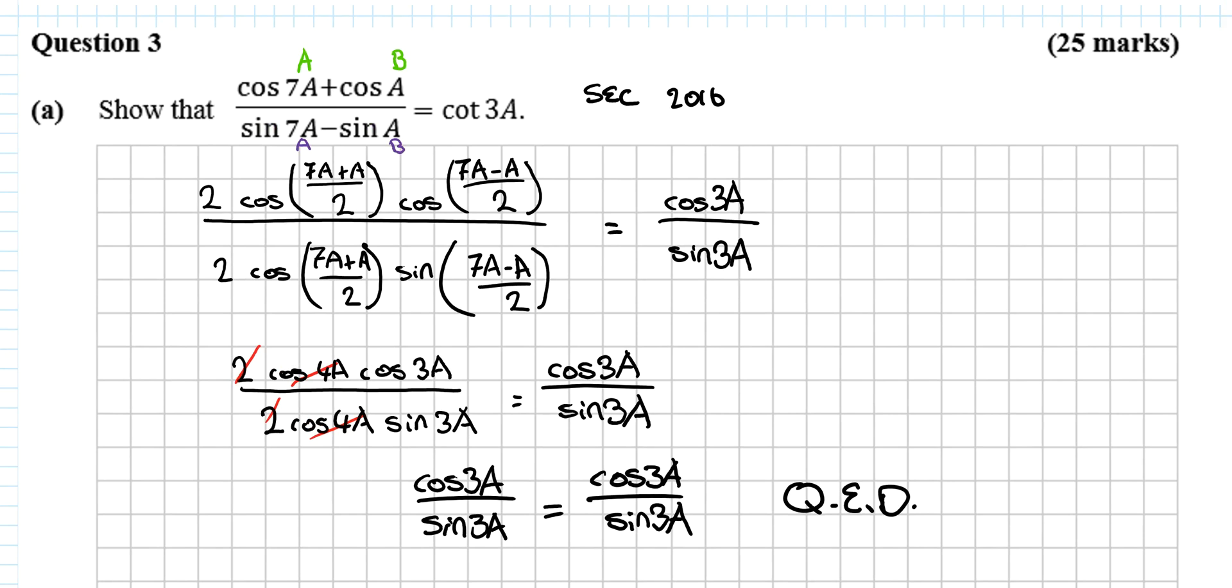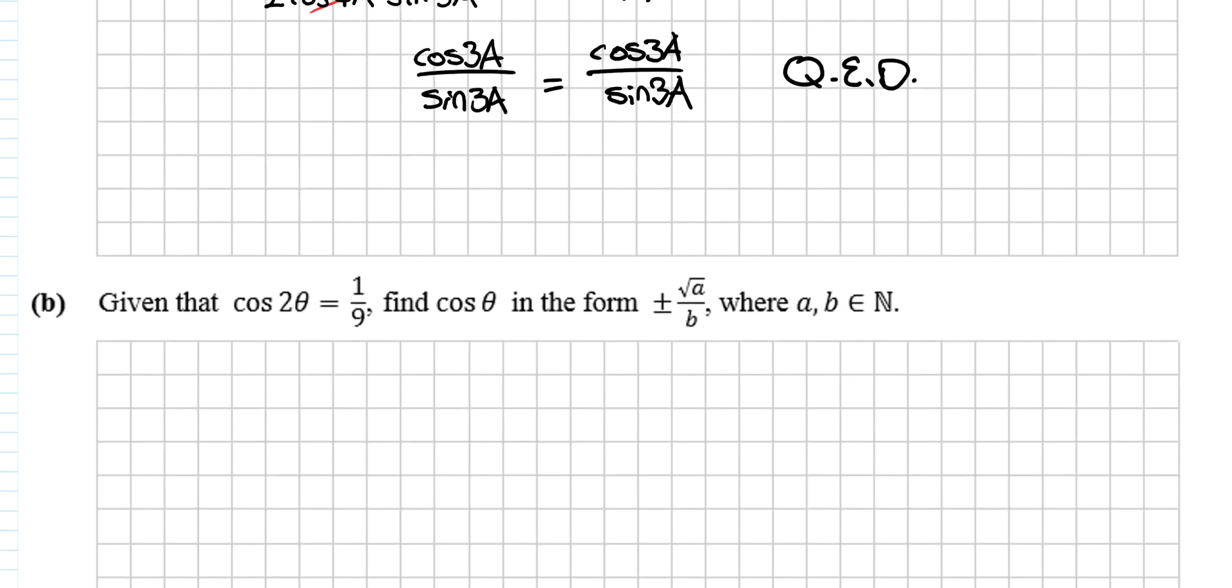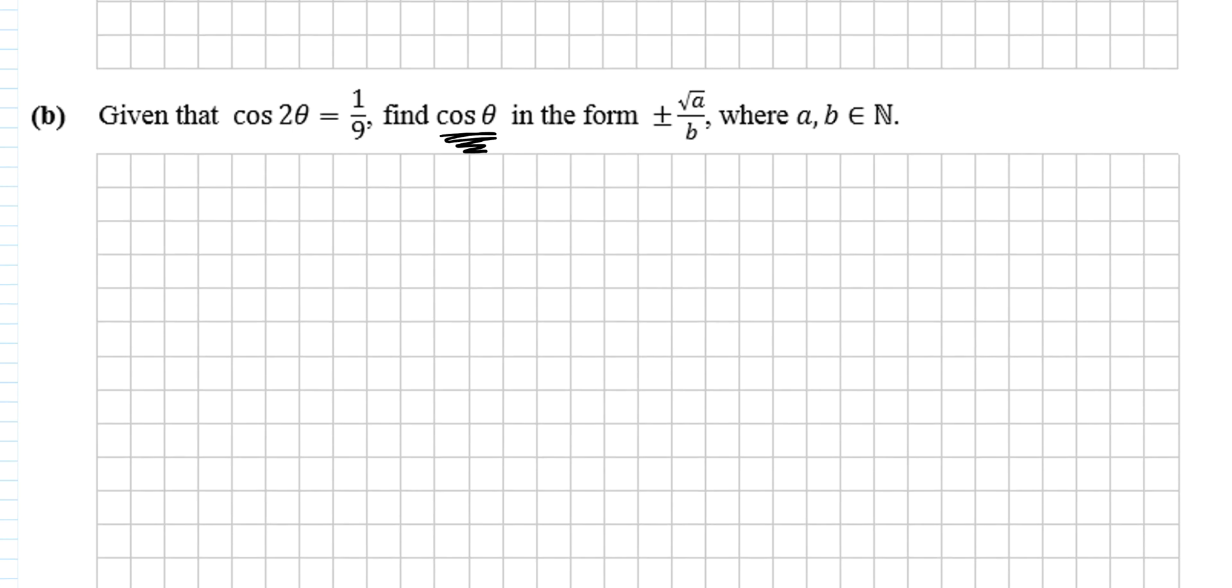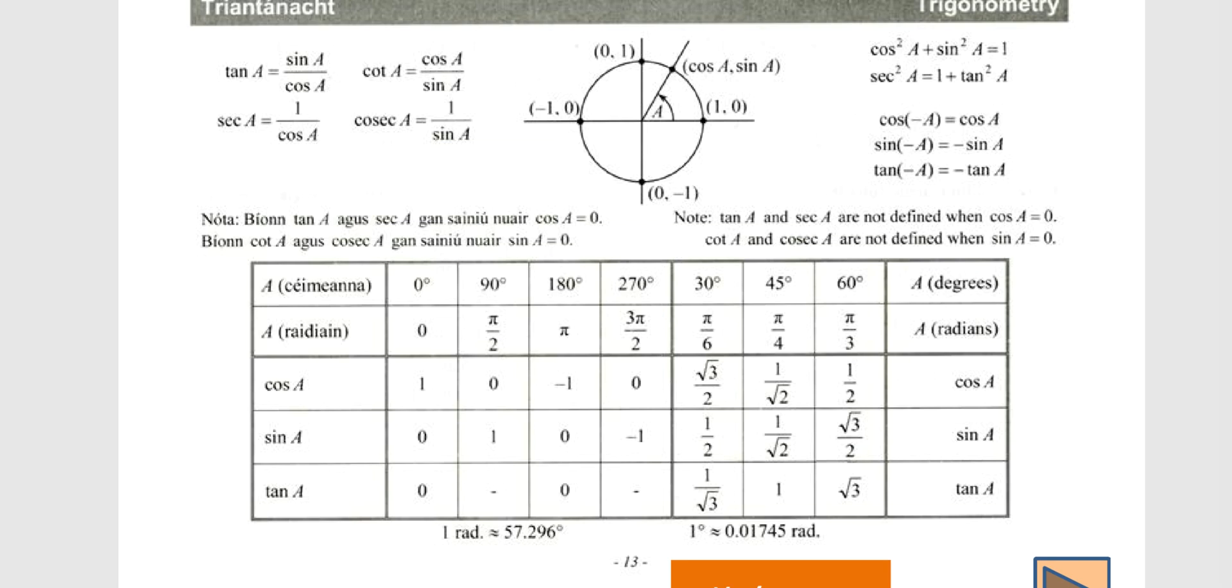Okay, so the next part of the question then, says that given cos 2 theta is equal to 1/9, find cos theta in terms of plus or minus root a over b. So we want to get cos theta on its own. So there's a few different ways of doing this. We can try and identify, using the double angle formulas, where there is a cos 2 theta.